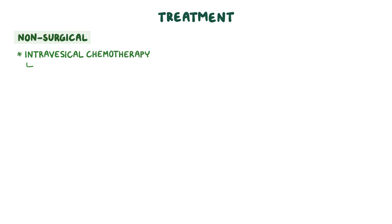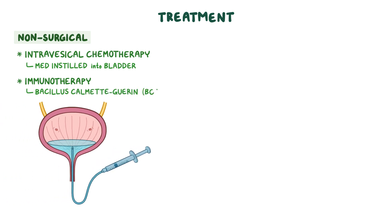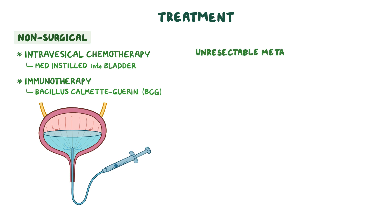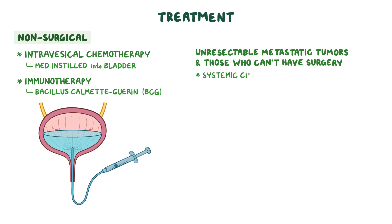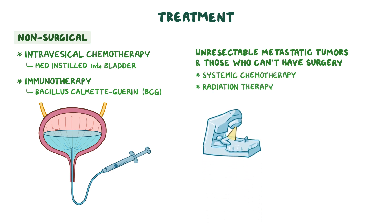Non-surgical treatment options include intravesical chemotherapy, where medication is instilled directly into the bladder, and immunotherapy using bacillus Calmette-Guérin (BCG) applied directly to the bladder tumor to slow tumor growth. For clients with unresectable metastatic tumors or those who cannot have surgery, treatment can involve systemic chemotherapy or radiation therapy, as well as palliative care to decrease symptoms and improve quality of life.